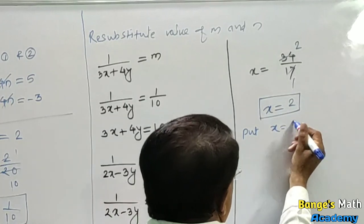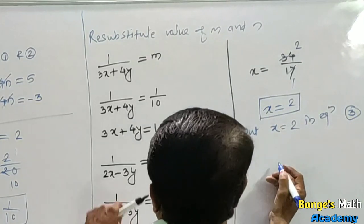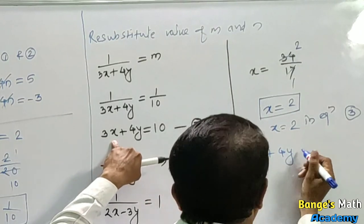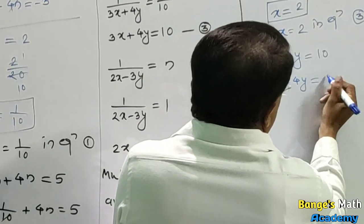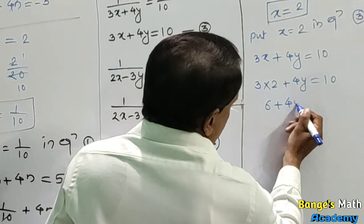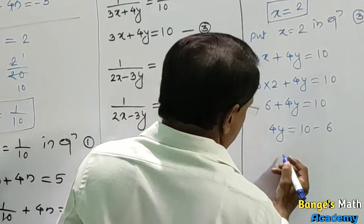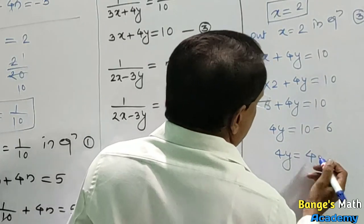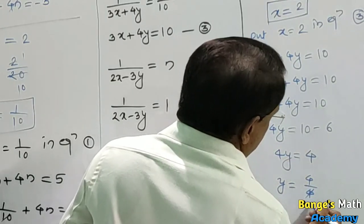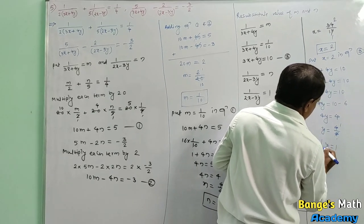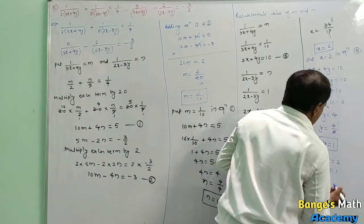Put x equal to 2 in equation 3: 3 into 2 plus 4y equal to 10. 6 plus 4y equals 10. Transfer 6 to RHS: 4y equals 10 minus 6 equals 4. Transfer 4 to RHS: y equals 1. The solution is x equal to 2 and y equal to 1.